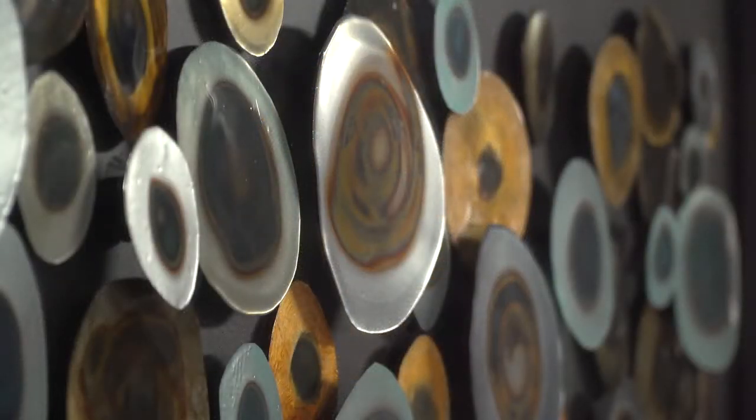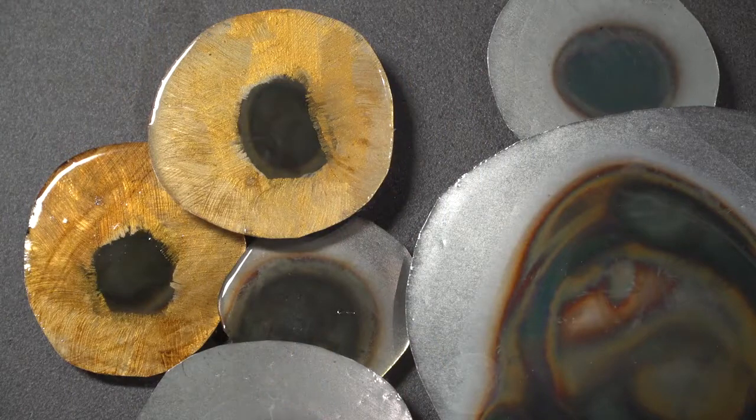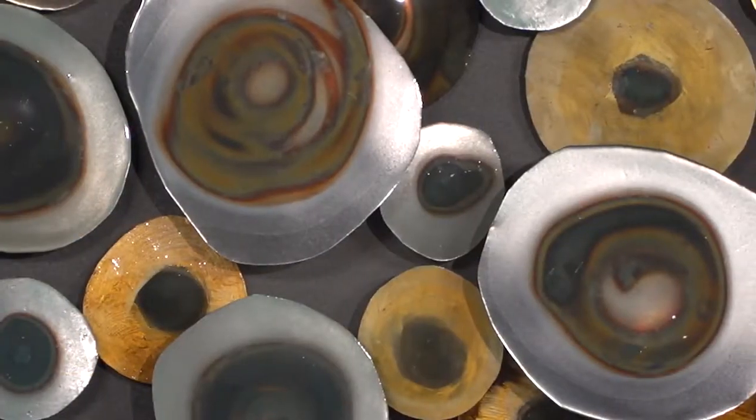This wall art features overlapping blowtorched iron discs with hand-painted acrylic accents in tones of silver, brown, and antique gold.